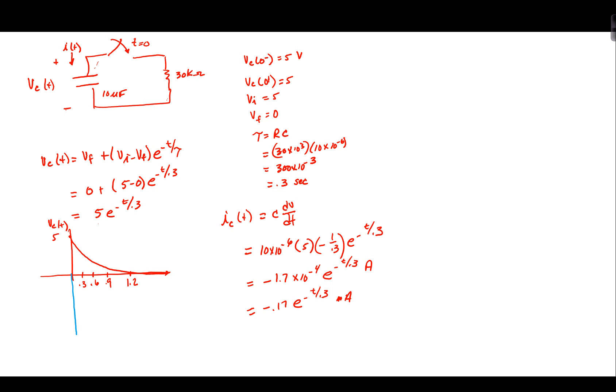Now, notice the current is negative. It's negative because it's going in the opposite direction of our current definition. It's going in this direction, which we knew it would. I mean, this is the source of the charge. The capacitor is the source of the charge. It's flowing through the resistor to ground. But again, that's in the opposite direction of our passive reference that we gave it.